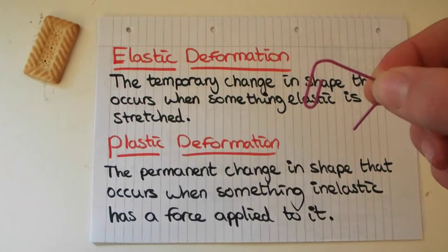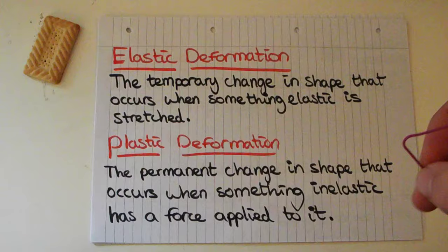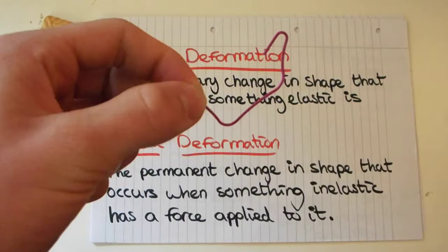Instead of calling this inelastic deformation, physicists have been a bit more creative and called it plastic deformation. So plastic deformation is just when something inelastic gets deformed and that deformation is permanent.